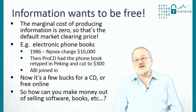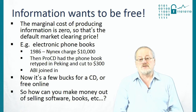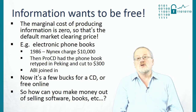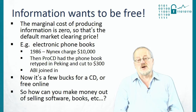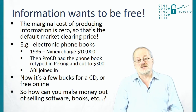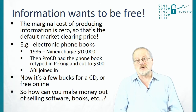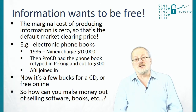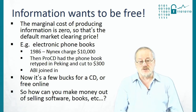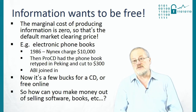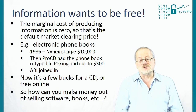We can see the development of this historically, for example, with the New York phone book, which started out costing $10,000 when the phone company 9X had a monopoly. As soon as another company, ProCD, came along and had the phone book retyped, they started selling it at $300, so 9X had to sell it at $300 too. Then ABI joined in, and pretty soon the price of the phone book was just a few dollars — the cost to distribute the CD — or you can get it online for free in return for looking at a few ads.